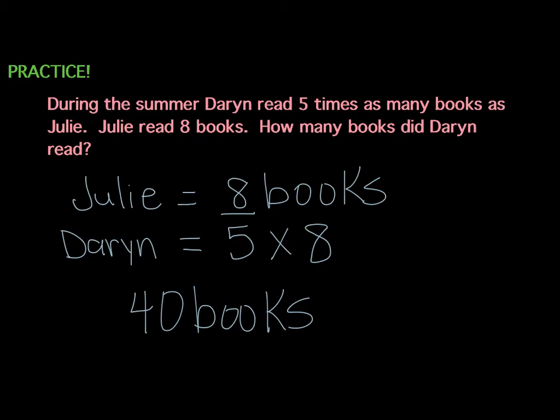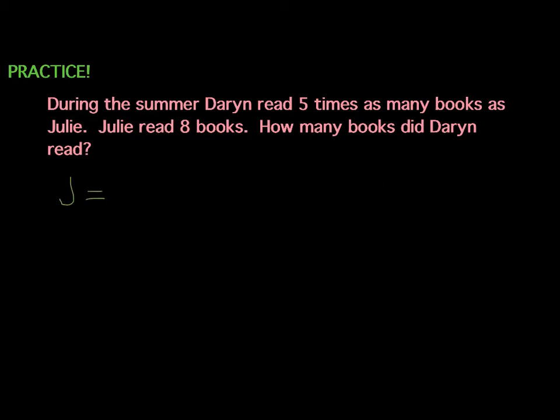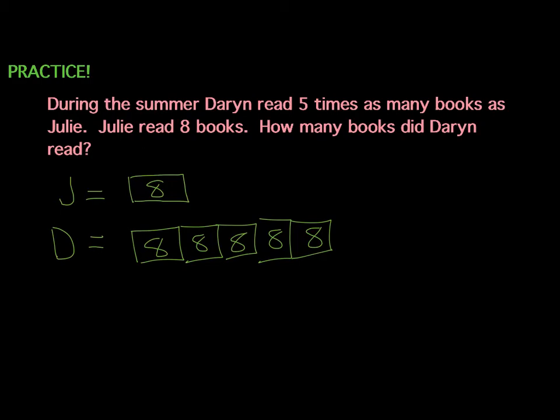Now, another way to look at this problem is to actually draw a picture. We could use J to stand for Julie. And again, we know that she read eight books, so we're just going to put an eight in that rectangle. And we know that Darren, which we're going to use D to stand for, was five times as many as that. So if we had five rectangles, and each of those had eight in them, this is another way to look at that problem. It's basically telling us five times eight like we looked at before. But you can also use a picture to help you represent and model the problem to solve it. We're still going to get the same answer because eight times five is still 40.